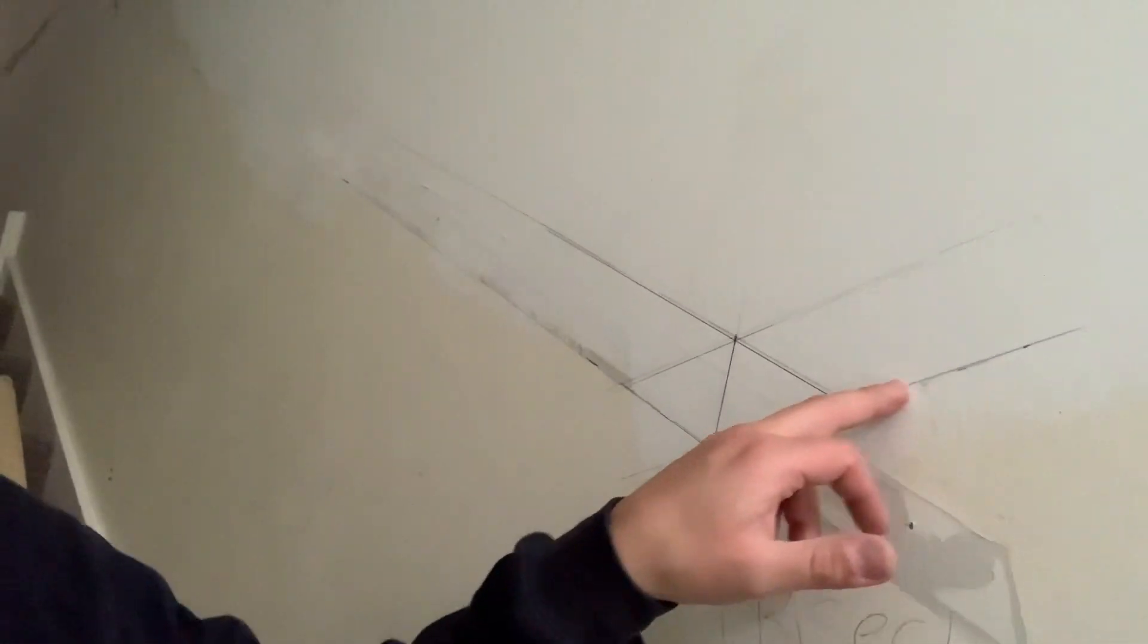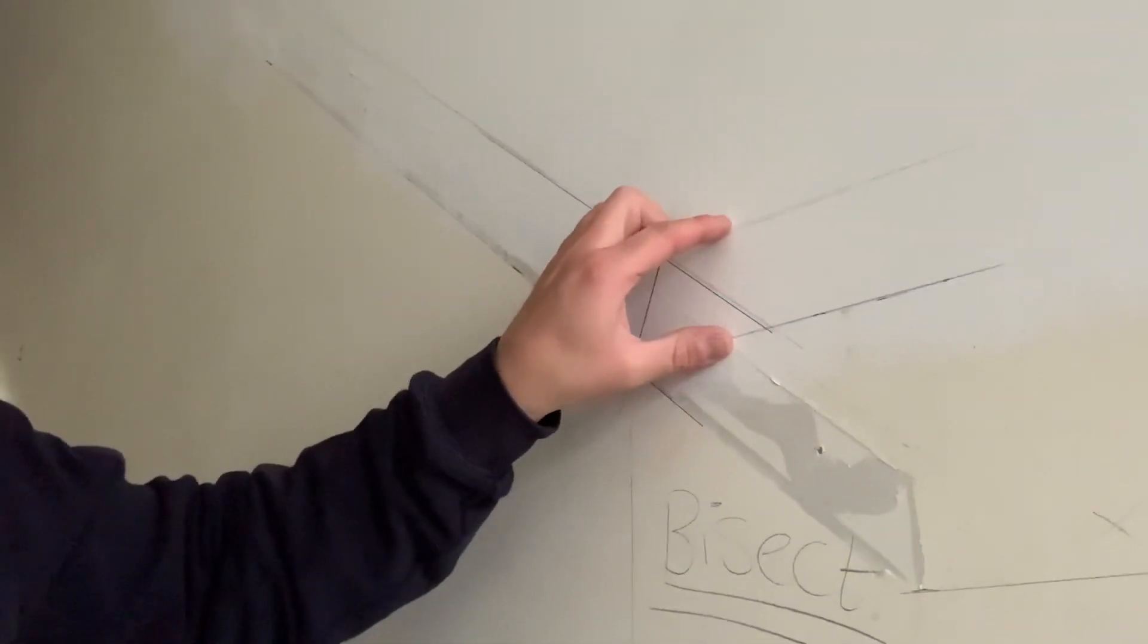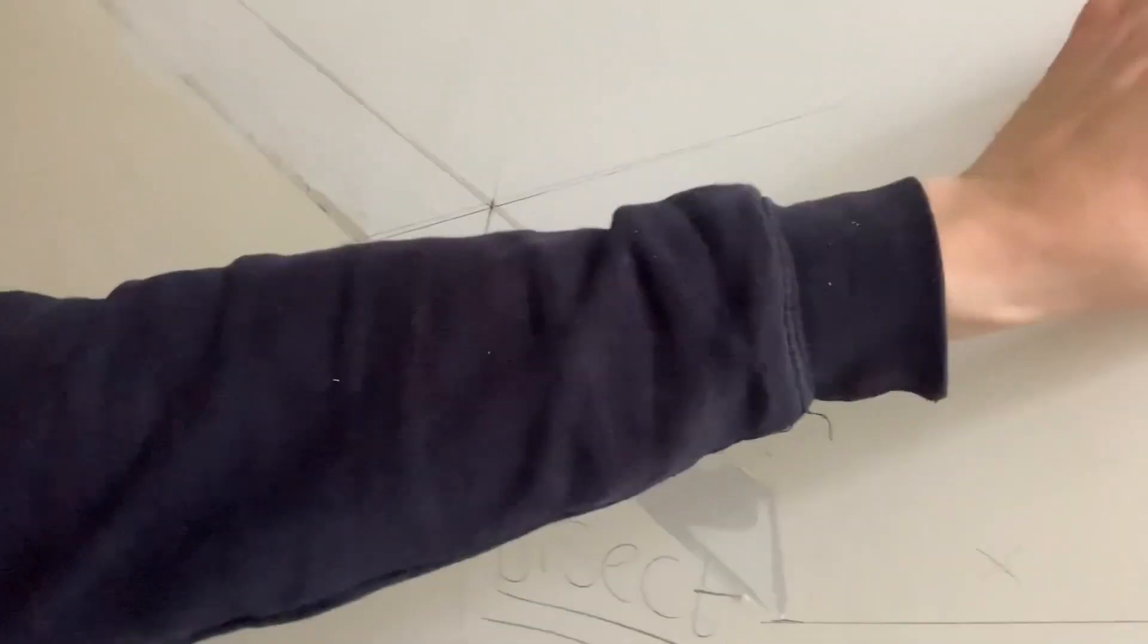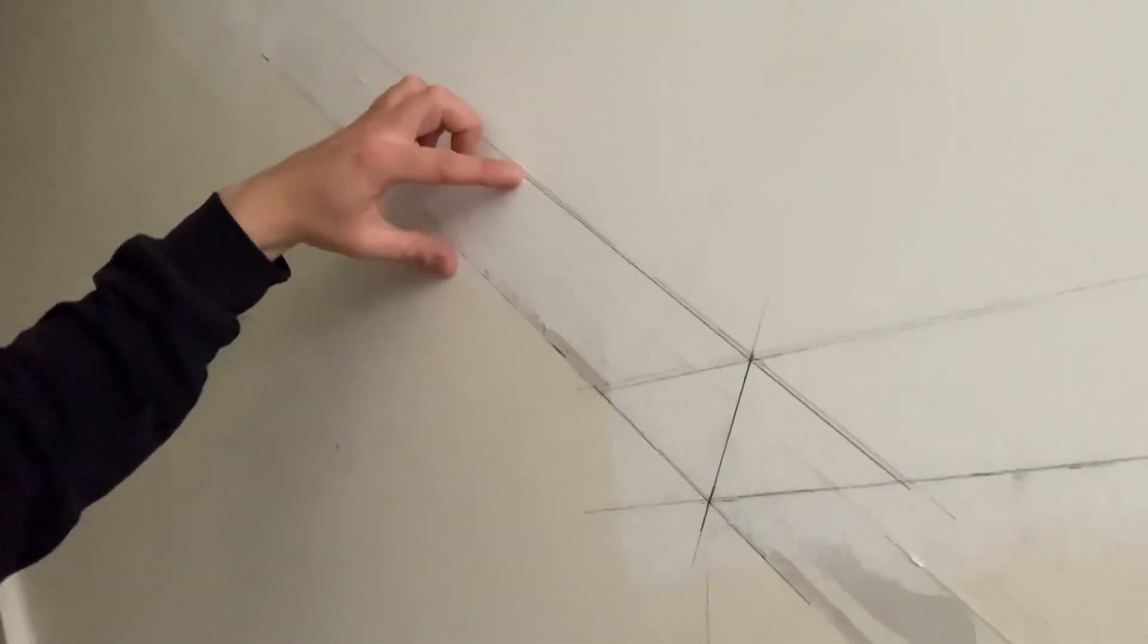So what we're going to do is first of all find the datum height of the dado rail. And then I'm going to transfer the thickness of the dado rail all the way through. I'm going to do that on both sides.